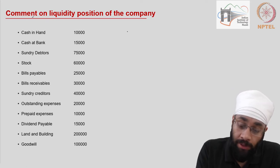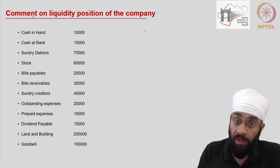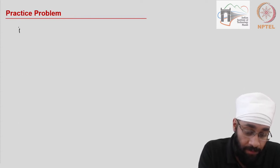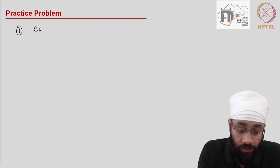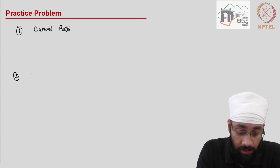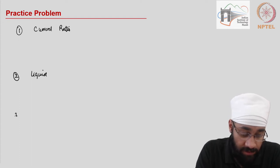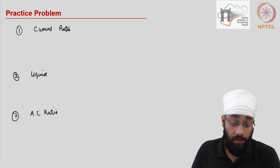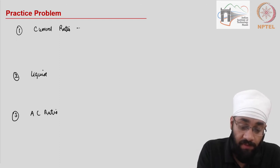In order to comment on the liquidity position of the company, there are three indicators that we use: number one, current ratio; number two, liquid ratio; and number three, absolute liquid ratio.